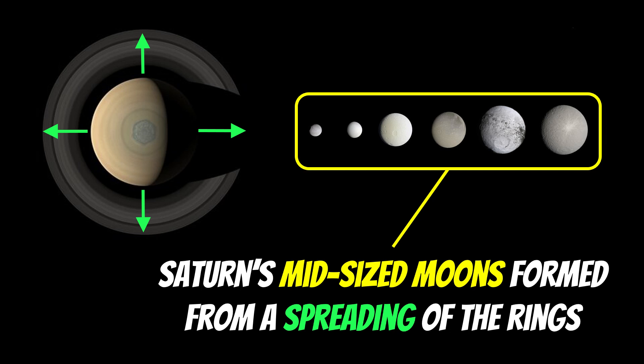Saturn has moons that have their own atmosphere like Titan, very small moons in its actual rings itself, and then it has moons in between, which are mid-sized moons, which are the ones we're interested in for this video and how they actually are formed from the rings themselves.